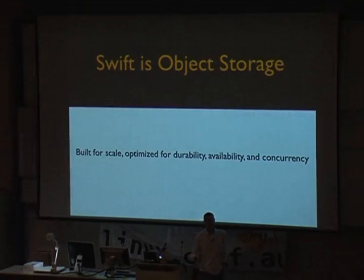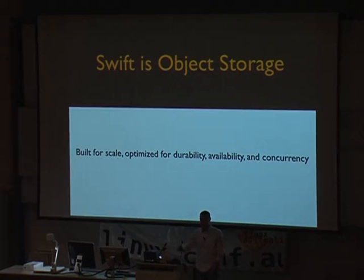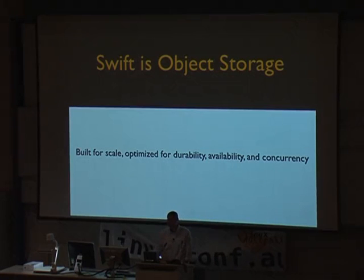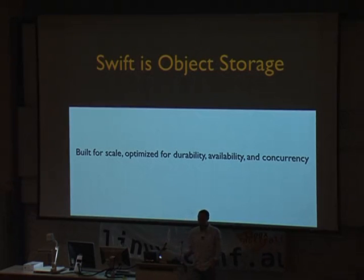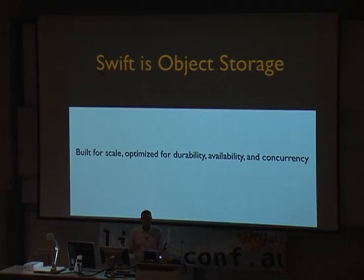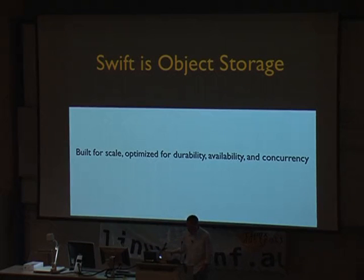Swift is object storage. It's not block storage. It's not a distributed file system. You can't mount it. It's not POSIX compliant. In fact, it relaxes some of the POSIX constraints that would be on a file system in order to achieve massive scale. Swift was built for scale, and it's optimized for durability, availability, and concurrency.